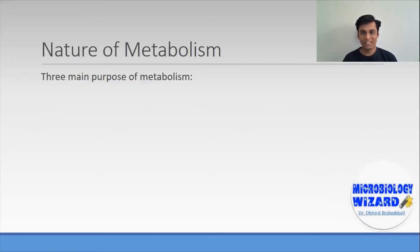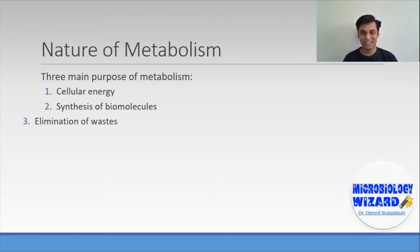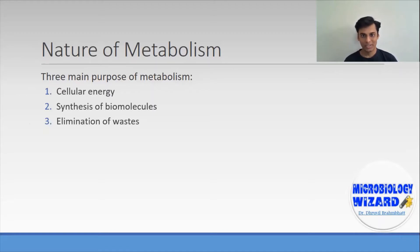Before we begin, let's understand the nature of metabolism. There are three major purposes of metabolism: first, cellular energy; second, synthesis of biomolecules; and third, elimination of waste. For cellular energy, food is converted into cellular processes through metabolic reactions and through a set of chemical reactions.